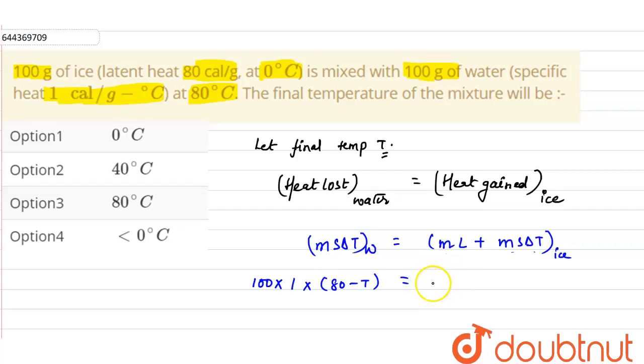Mass of the ice is 100 grams × latent heat of ice is 80 calories per gram + mass of the ice is 100 × specific heat of water is 1 × change in temperature is T minus 0.